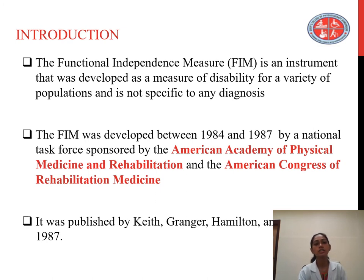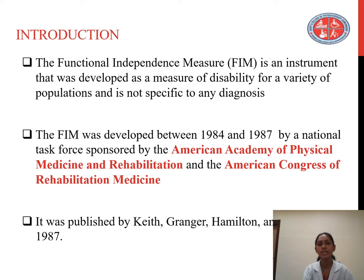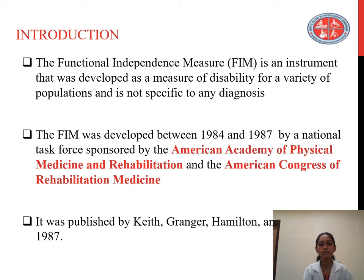Introduction: the Functional Independence Measure is an instrument that was developed as a measure of disability for a variety of populations and it is not specific to any diagnosis. The FIM was developed between 1984 and 1987 by a National Task Force sponsored by the American Academy of Physical Medicine and Rehabilitation and the American Congress of Rehabilitation Medicine. It was published by Keith Granger Hamilton in the year 1987.